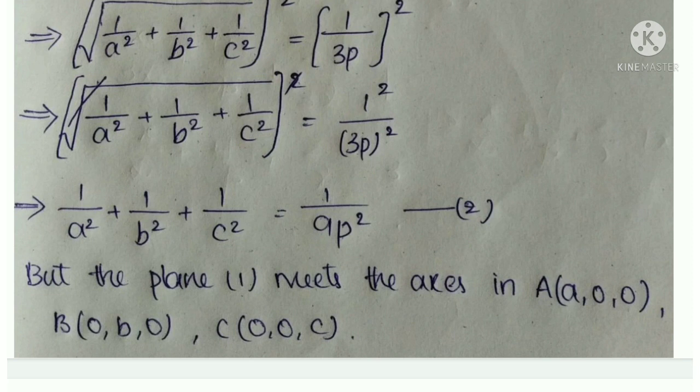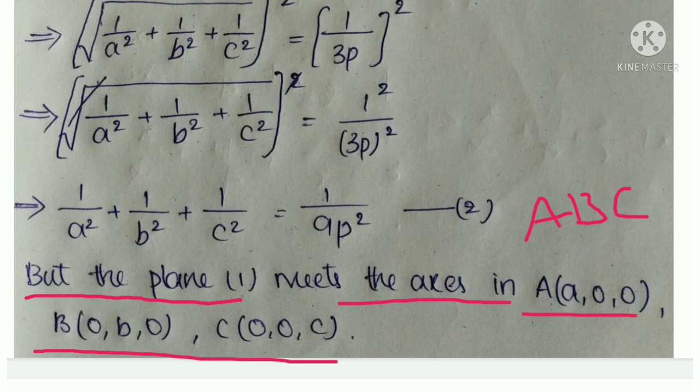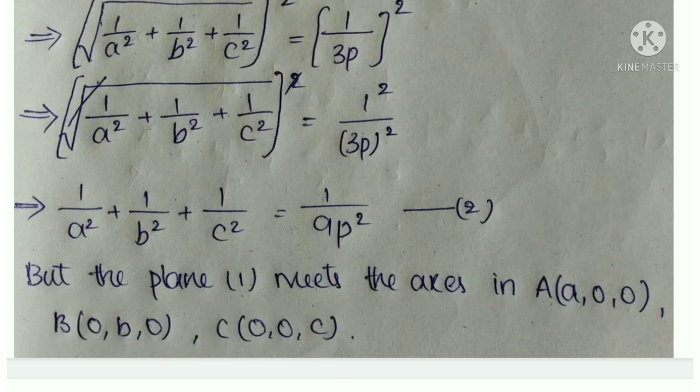But the plane (1) meets the axes in A, B, C. The coordinates are: A(a, 0, 0), B(0, b, 0), C(0, 0, c), where the plane intercepts each axis.